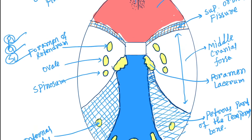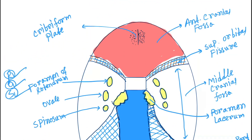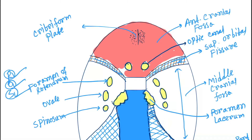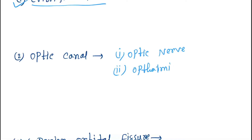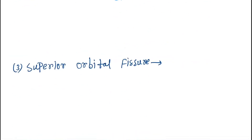Next is the optic canal. I forgot to mention the optic canal earlier - these two openings are the optic canals. The structures passing through the optic canal are: first, the optic nerve, and second, the ophthalmic artery.